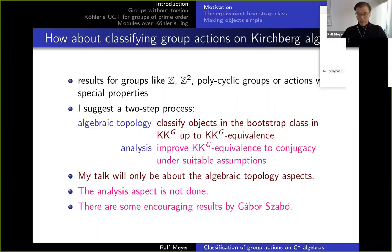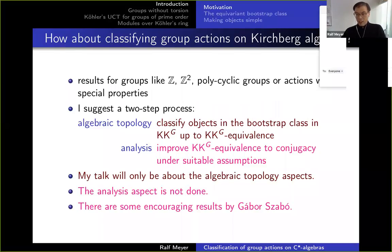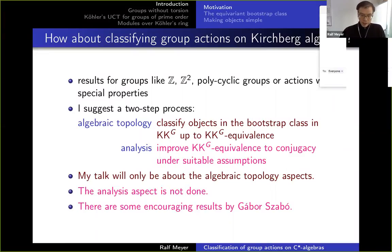I have very few things to say about the analysis aspect of improving KKG equivalence to conjugacy, and in fact this hasn't been done yet. I want to mention that there are some encouraging results by Gabor Szabo. One thing he could prove is that if you have homotopic actions in a suitable sense then they are already conjugate, under assumptions in line with current work on the Elliott program — something like stability and that they absorb tensorally some model actions.